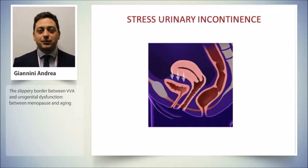Concerning stress urinary incontinence, we know it is often due to urethral hypermobility, but it is worsened when loss of estrogen leads to reduced thickness of the urethral epithelium or periurethral epithelium and reduced expression of periurethral vessels. So loss of estrogen also impacts the pathogenesis of stress urinary incontinence, not only as a problem of anatomical support.